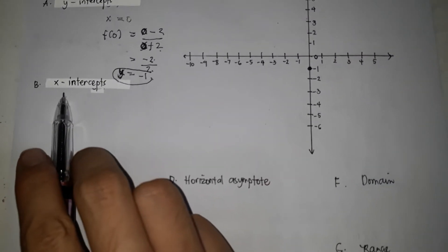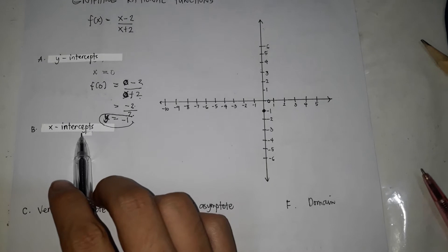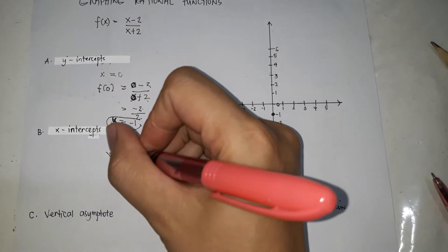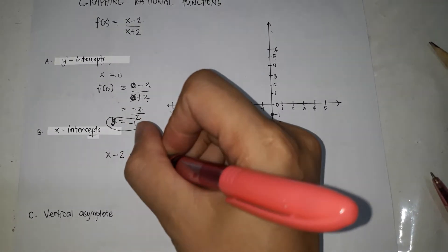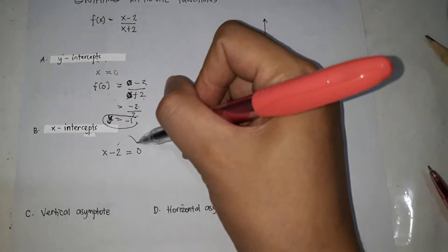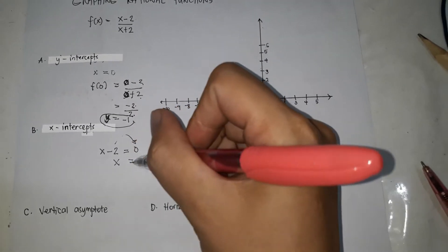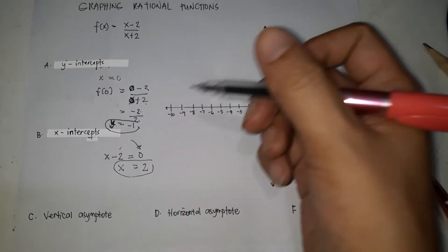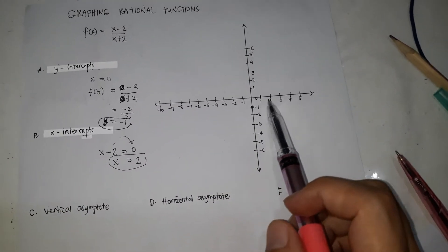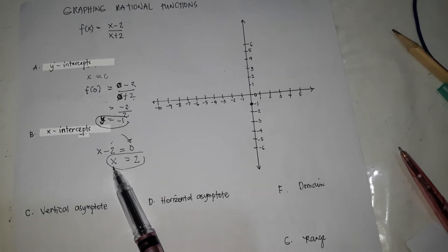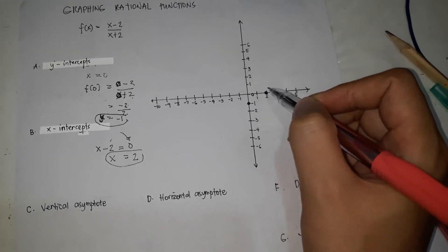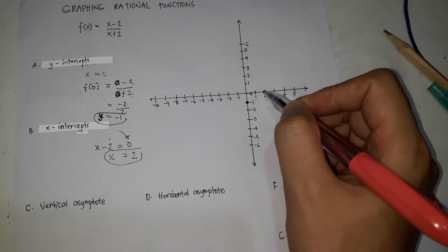Next, let's proceed with the x-intercept. To solve for the x-intercept, you take the numerator — x minus 2 — and equate it to zero. So x minus 2 equals 0; transpose the 2, and x is equal to 2. The x-intercept is where the graph passes through the x-axis. Since x equals 2, find 2 on the x-axis — the graph passes through that point.